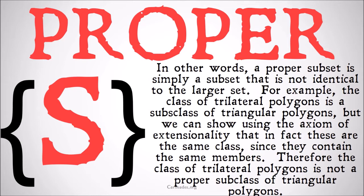A proper subset is simply a subset that is not identical to the larger set. For example, the class of trilateral polygons is a subclass of the class of triangular polygons. But we can show using the axiom of extensionality that these are in fact the same class, since they contain exactly the same members — all things that have three angles have three sides if they're polygons. Therefore the class of trilateral polygons is not a proper subclass of triangular polygons, nor vice versa.